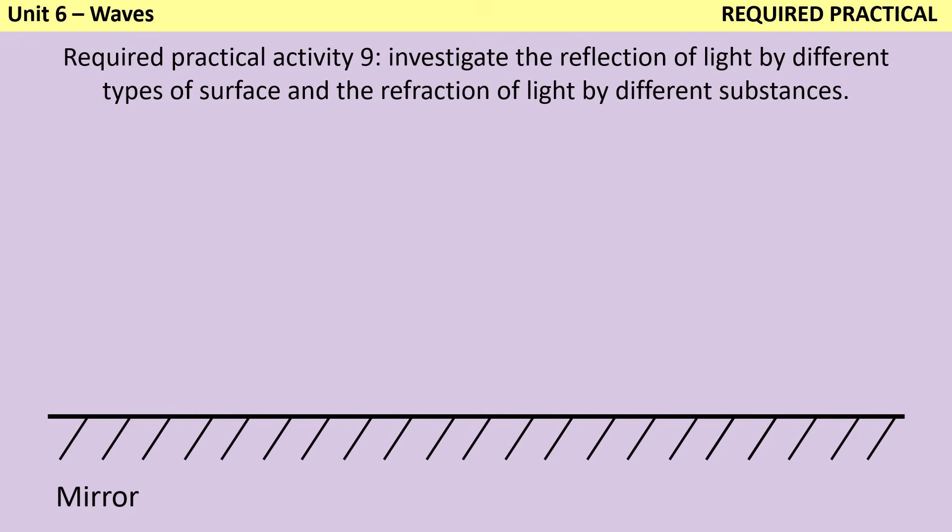Waves can be reflected at the boundary between two different materials, and you need to be able to construct a ray diagram to show this, normally using just a plain flat mirror. The first thing that you need to draw is the normal. This is the imaginary construction line at the point where the wave is going to meet the change in media, and it's going to sit at 90 degrees to that surface.